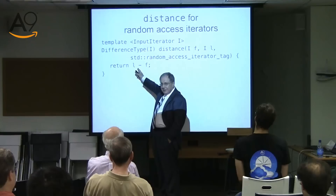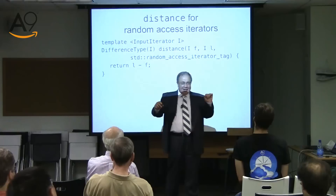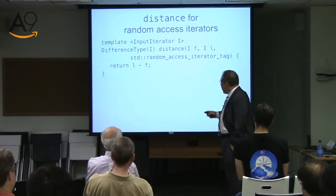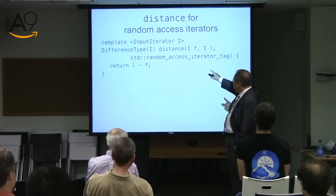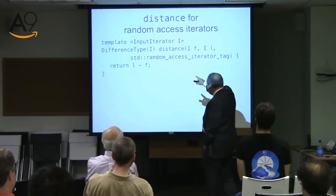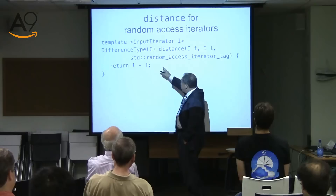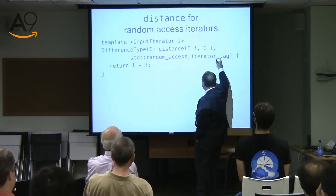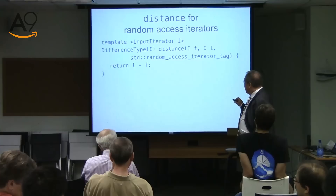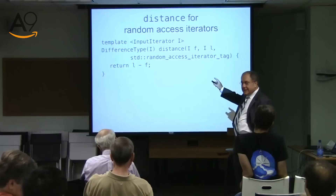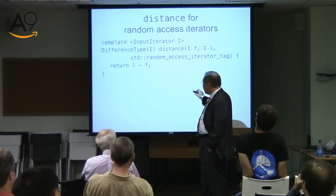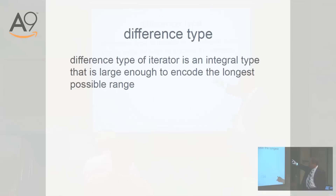By the way, for a valid range, this has to be non-negative — last should be greater than or equal to first. So what we do is define distance as a different function, overloaded on this mysterious thing called iterator tag. We will see in a second what is the whole point of all of this.